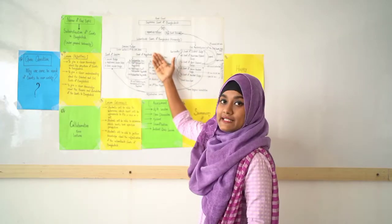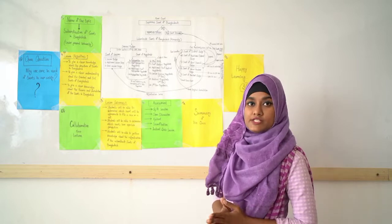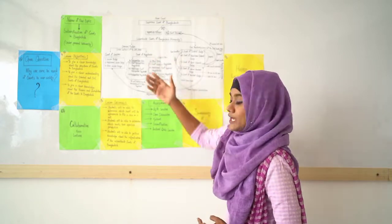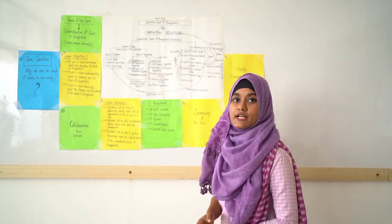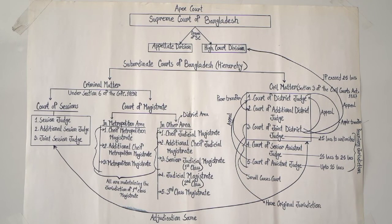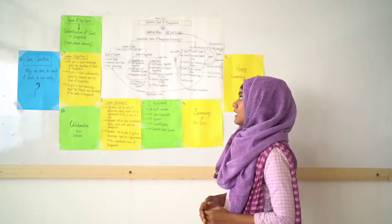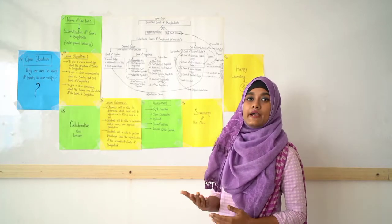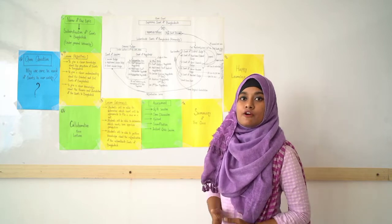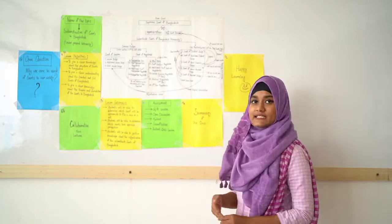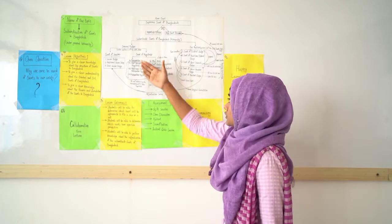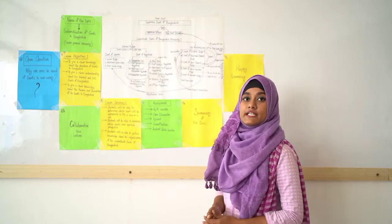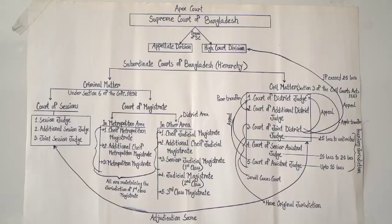In the case of the Court of Magistrate, the magistracy is described under two categories: the Executive Magistrate and the Judicial Magistrate. The Judicial Magistrates are those who are recruited by the government through the BJS examination. The magistrates are divided into two categories on the basis of their functional area.